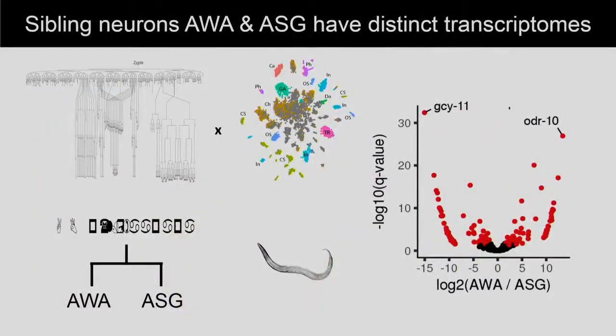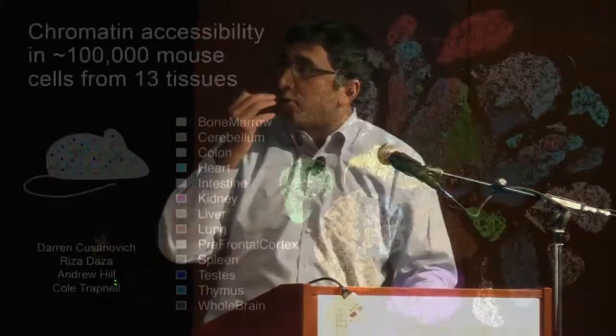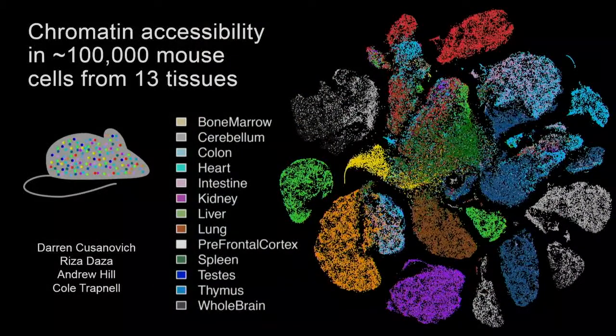There's a lineage available for C. elegans, which I referenced earlier, and we're starting to try to put this kind of information together. As an example, this is a set of sibling neurons separated just by one mitosis. We can compare the transcriptional profiles of these two sibling neurons and see that they're quite distinct, and look at the actual genes that are different between them.